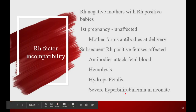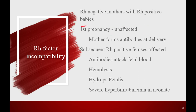Now we're onto RH factor incompatibility — a relatively simple concept we touched on in normal prenatal care. It affects RH negative mothers — O negative, A negative, B negative, whatever — with RH positive babies. If all her babies are RH negative, it's not a problem. But if her babies are RH positive, this is a real issue. The first pregnancy is generally unaffected. Mom forms antibodies against the baby's blood type at delivery, when there's a little mixing of fetal and maternal blood.